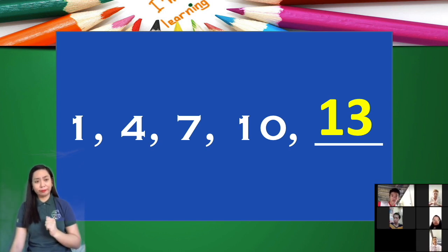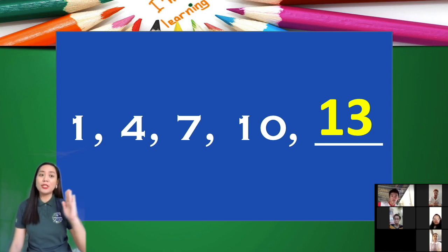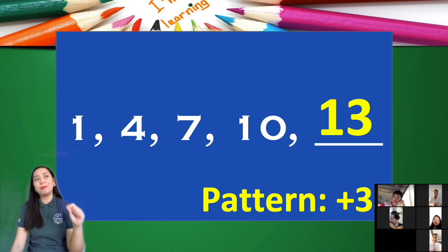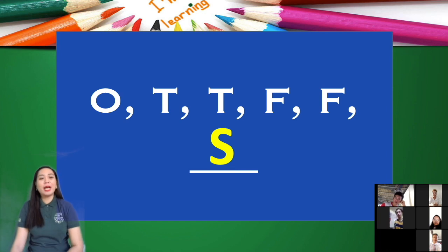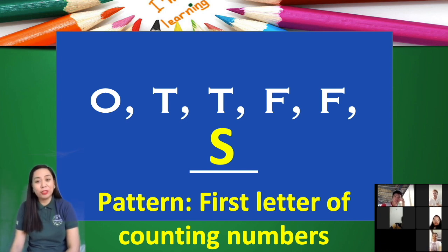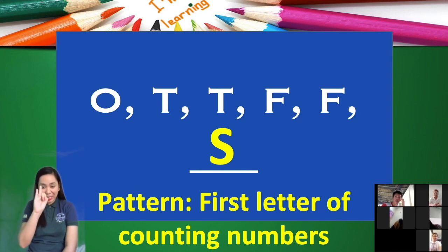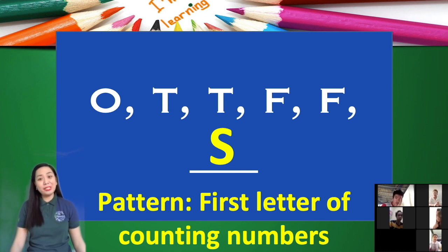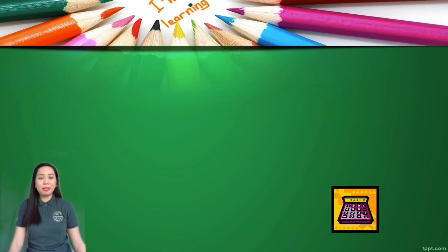Let's move on. For 1, 4, 7, 13 — what could be the pattern to get the next value? We are just adding 3. What about O, T, T, F, F, S? This is actually the first letter of our counting numbers: 1 is O (One), T (Two), T (Three), F (Four), F (Five), and S (Six). Good job.